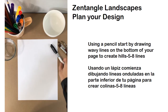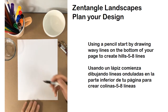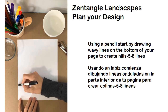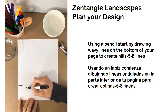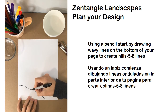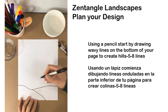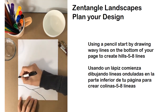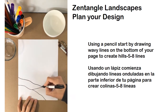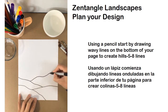Alright middle schoolers, you're going to start by planning your design. I'm going to ask you to use like five to eight different lines. Remember, we're making a landscape, so we want them to be like nice organic wavy lines. They don't need to be perfect in any way — things from nature are not perfect anyways. You just want to be creating spaces for yourself and these rolling hills for your landscape.